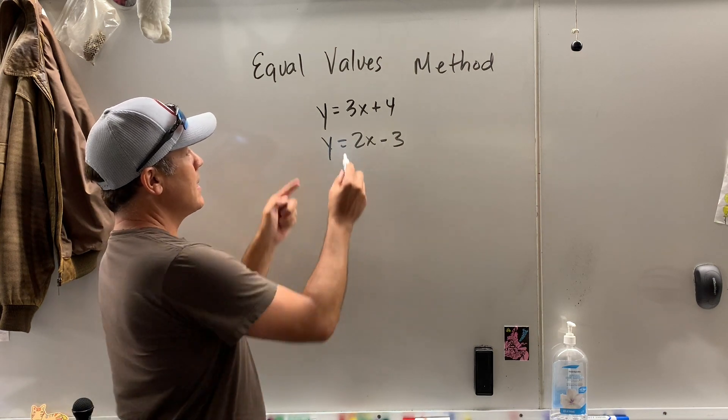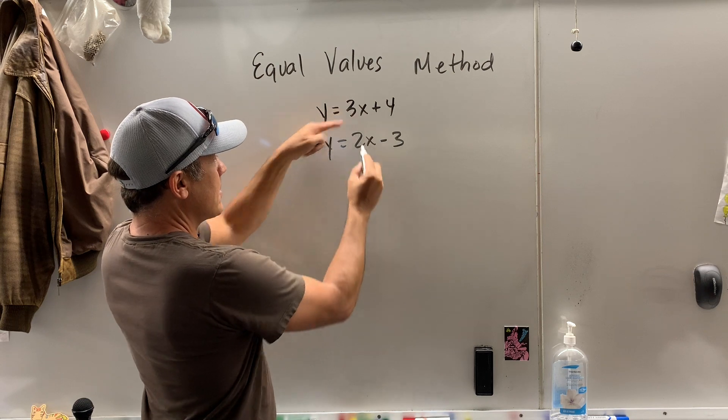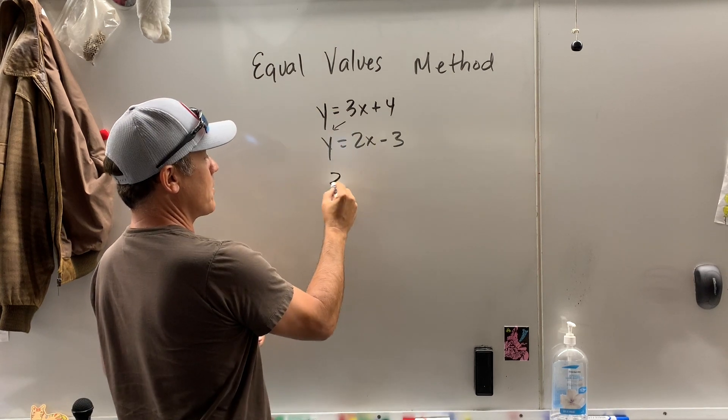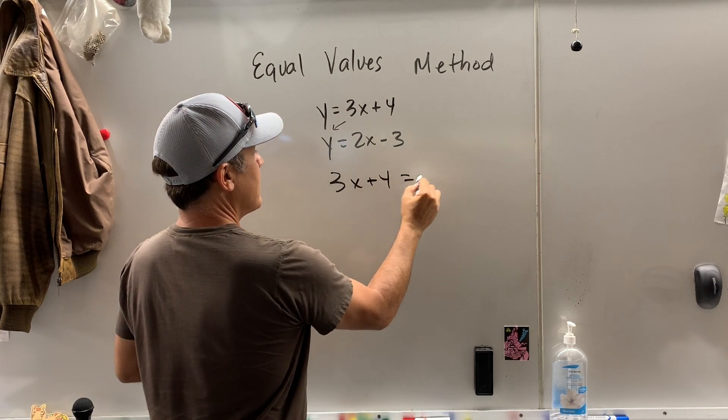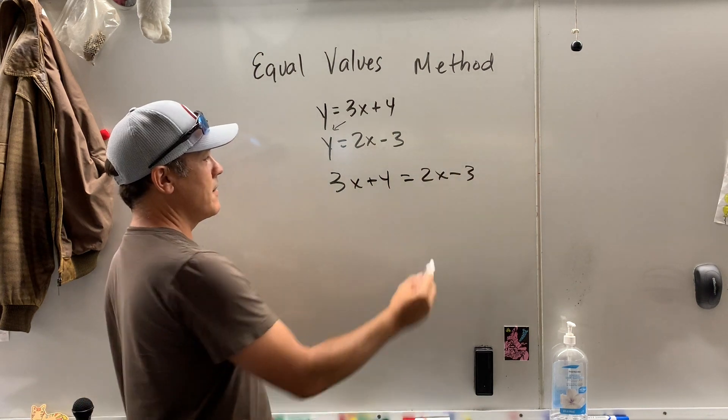All you got to do, since y's are equal to each other, I can take this and substitute it right in there. So 3x + 4 equals 2x - 3. And then we could solve for x.